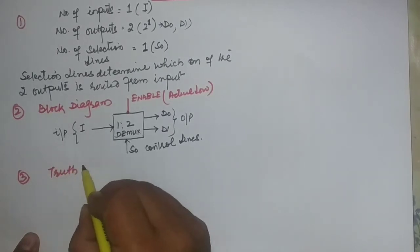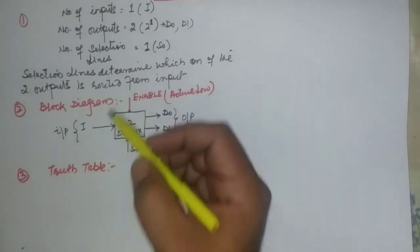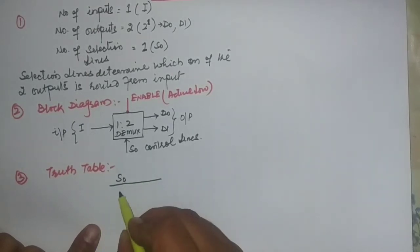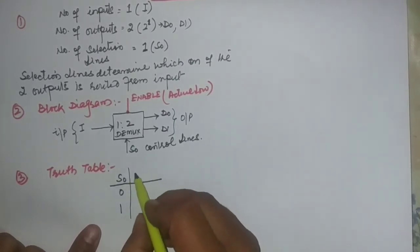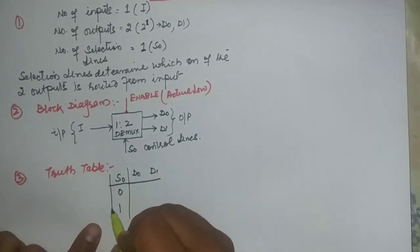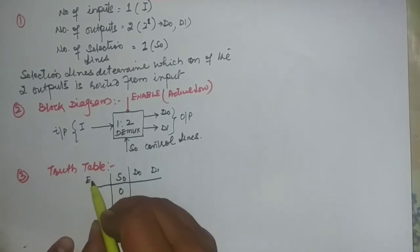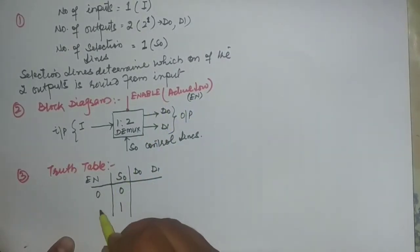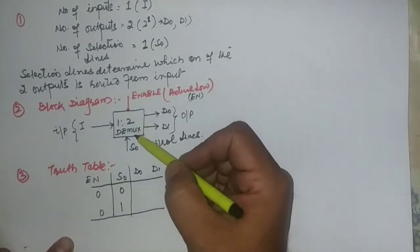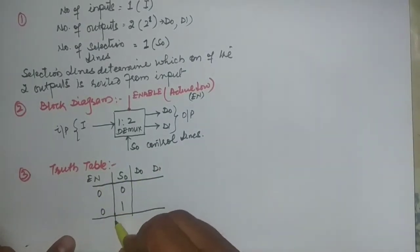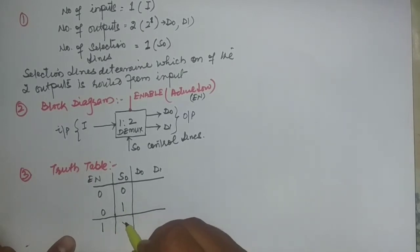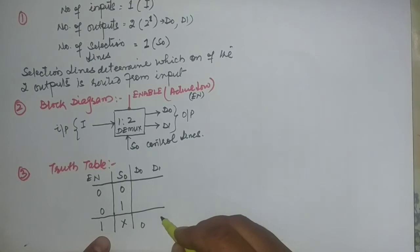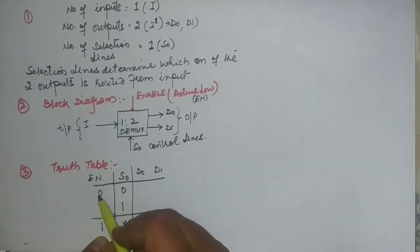The third point is the truth table. We have one selection line S0 which can have only two values, either 0 or 1. There are two outputs D0 and D1, and one enable signal En which is active low. When the enable signal is 0, the circuit is active. Whatever the value of S0 — either 0 or 1— the output will always equal zero when enable is not active.